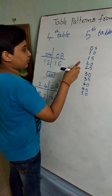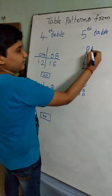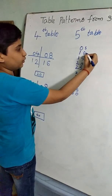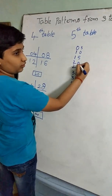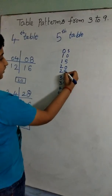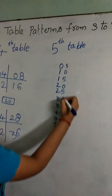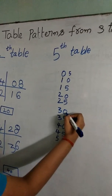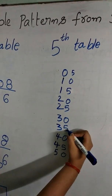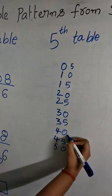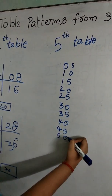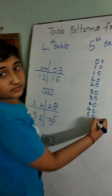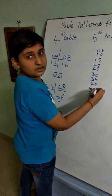This is the 5th table: 5 ones are 5, 5 twos are 10, 5 threes are 15, 5 fours are 20, 5 fives are 25, 5 sixes are 30, 5 sevens are 35, 5 eights are 40, 5 nines are 45, 5 tens are 50. This is the 5th table.